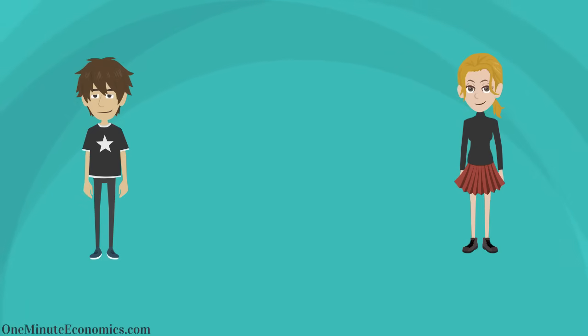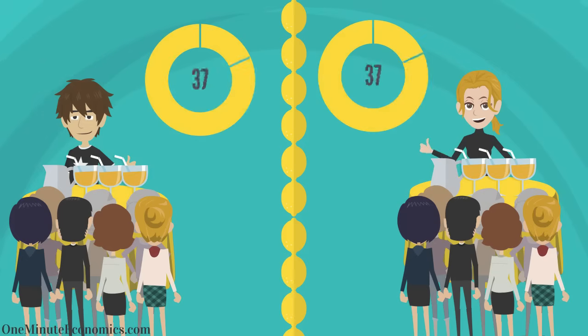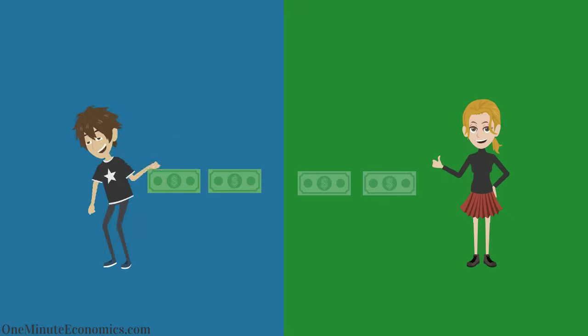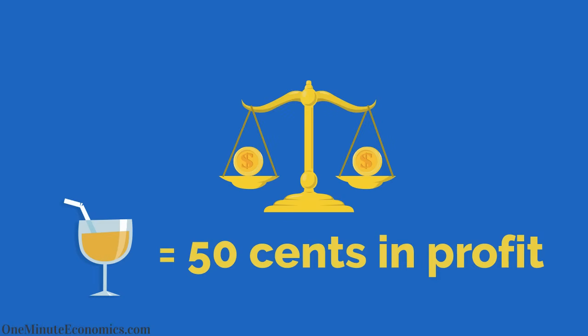Bill and Rachel are two competitors who sell lemonade at $1 per glass. Each person sells 200 glasses daily and after subtracting expenses from the $200 revenue is left with $100 as pure profit. To oversimplify, you put $0.50 in your pocket after each $1 sale.